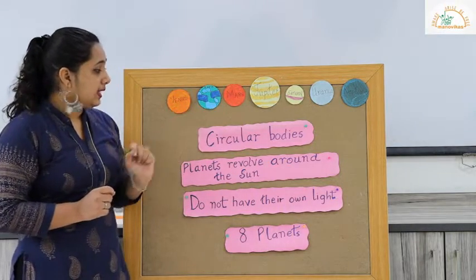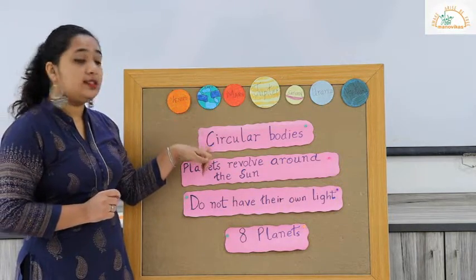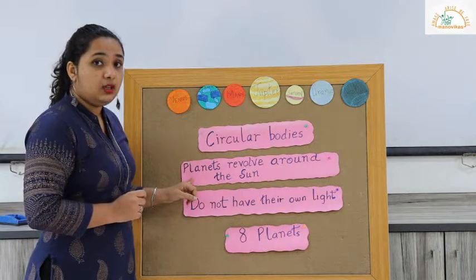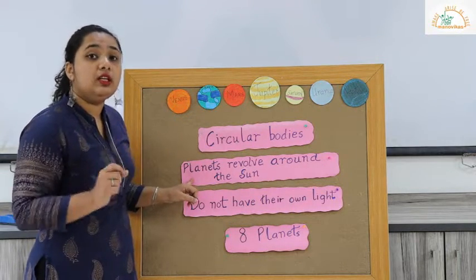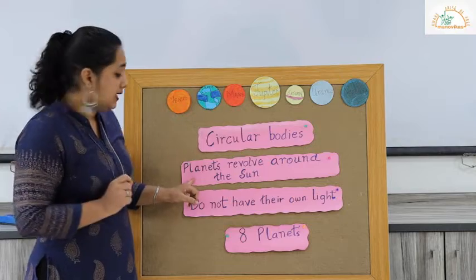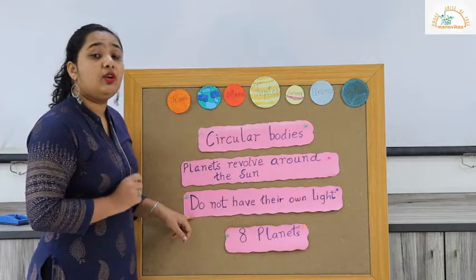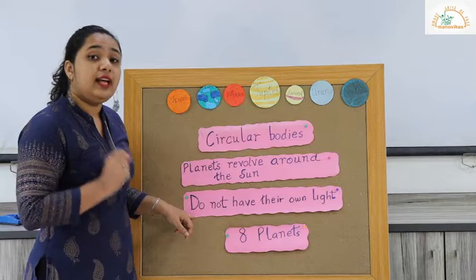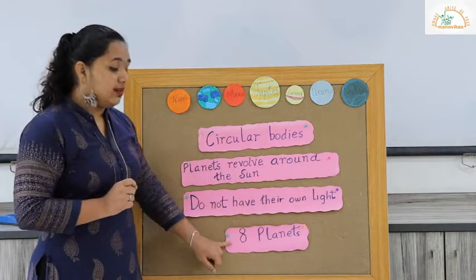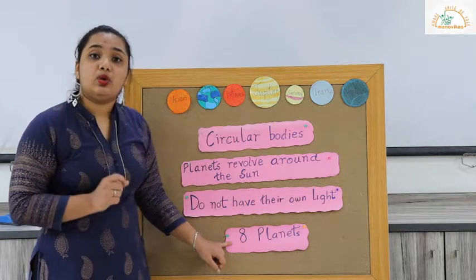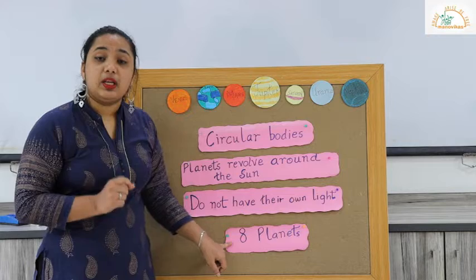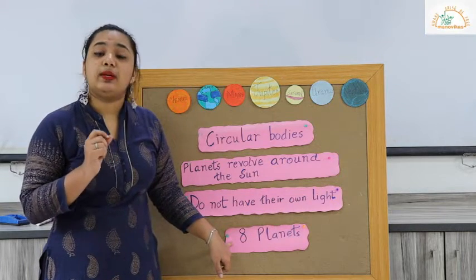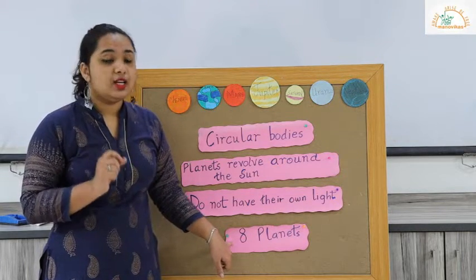Let us revise about planets again. They are circular bodies. Planets revolve around the sun on fixed paths, which we will learn in our later class. They do not have their own heat and light — the sun's light reflects on the planets. And there are eight planets in the solar system. Now we will learn about each planet in detail through an interesting story.